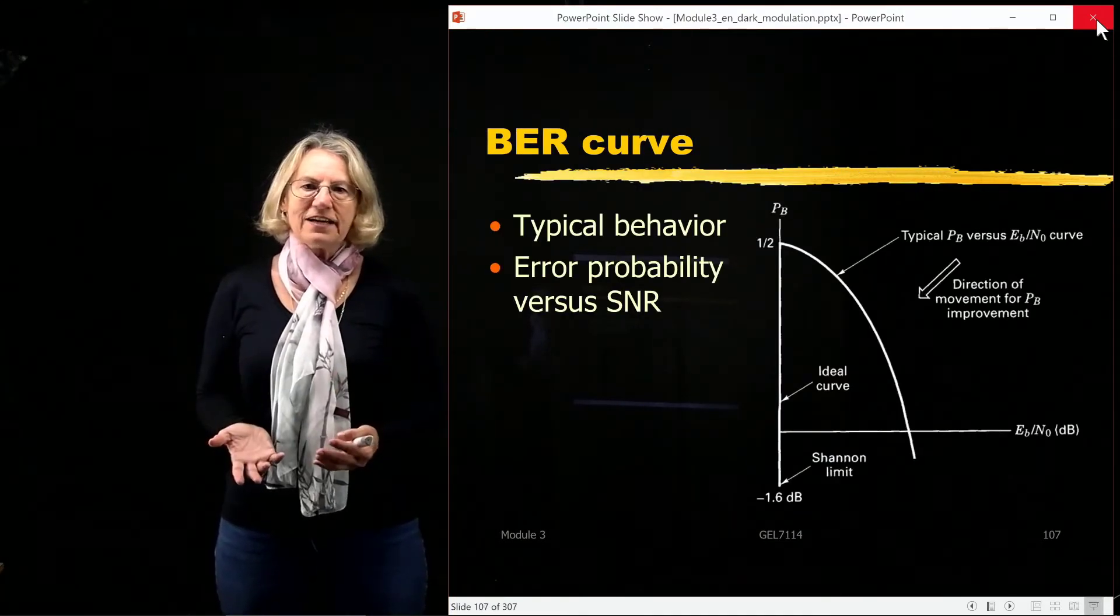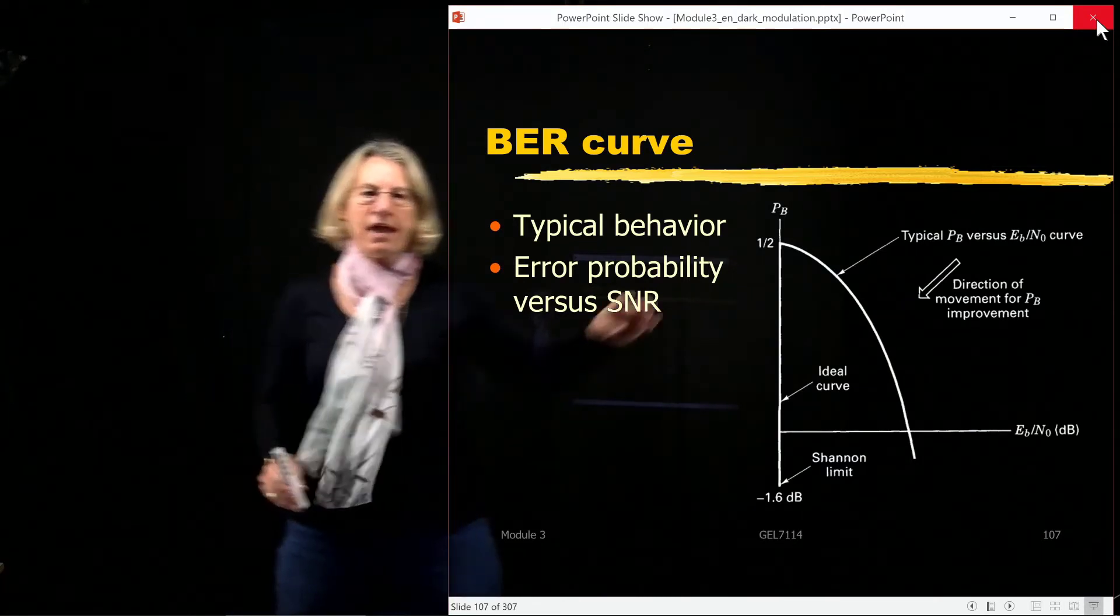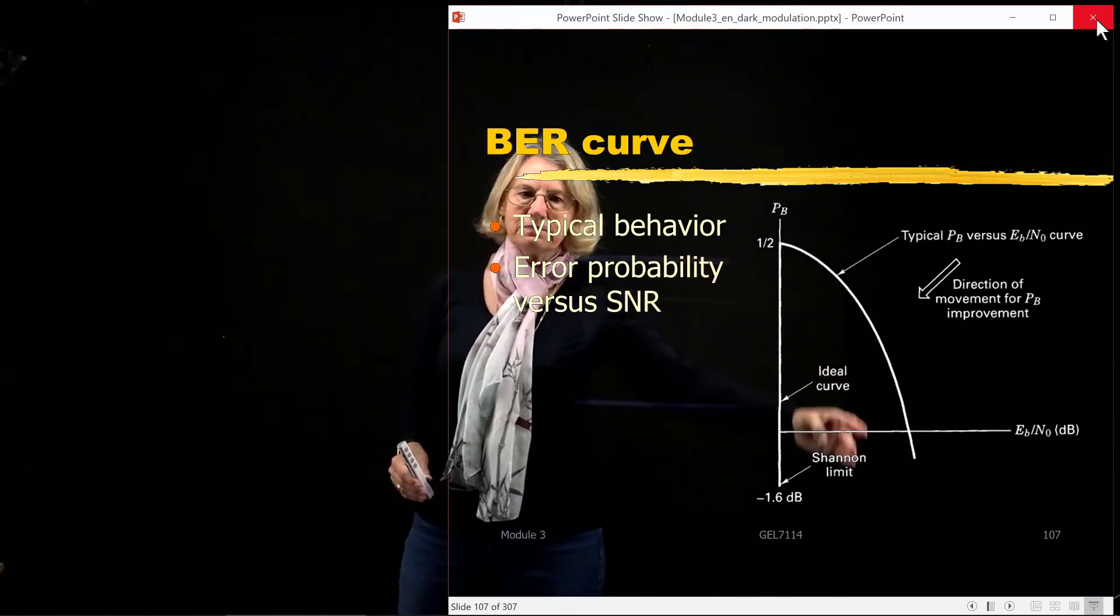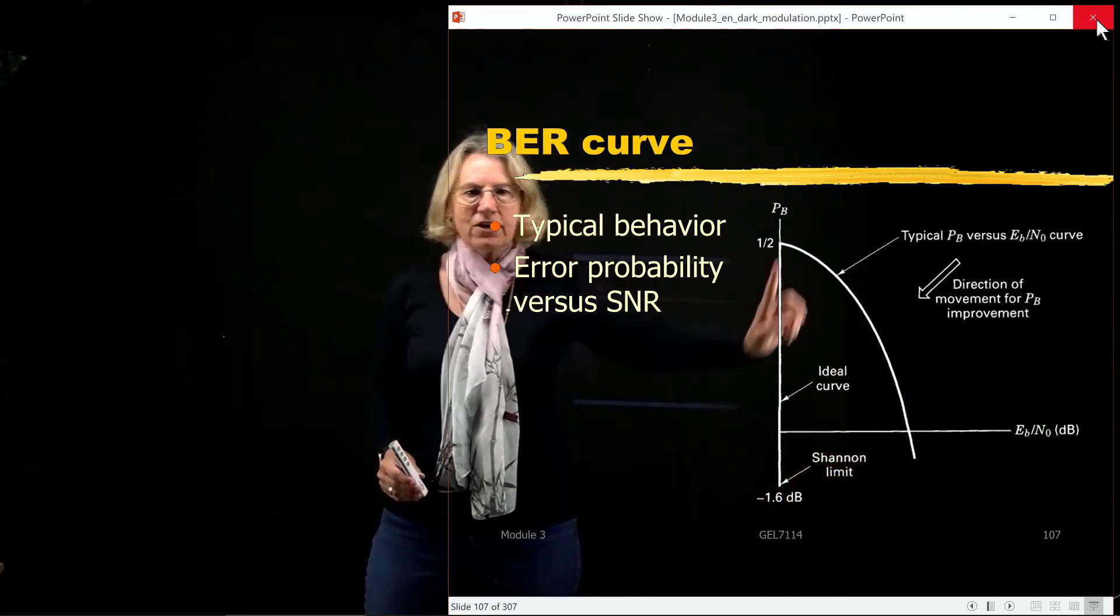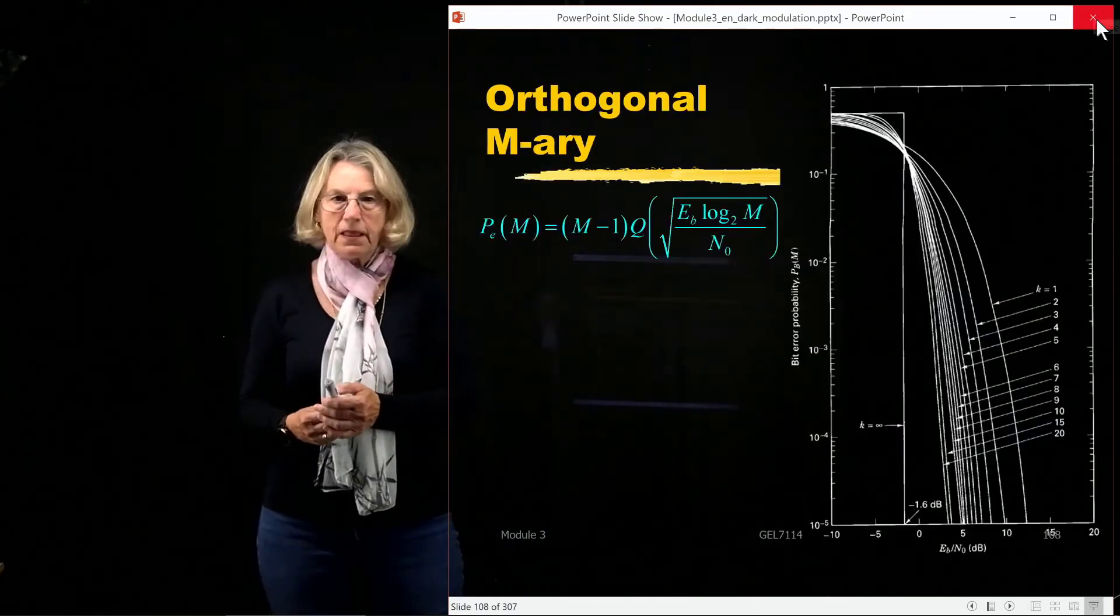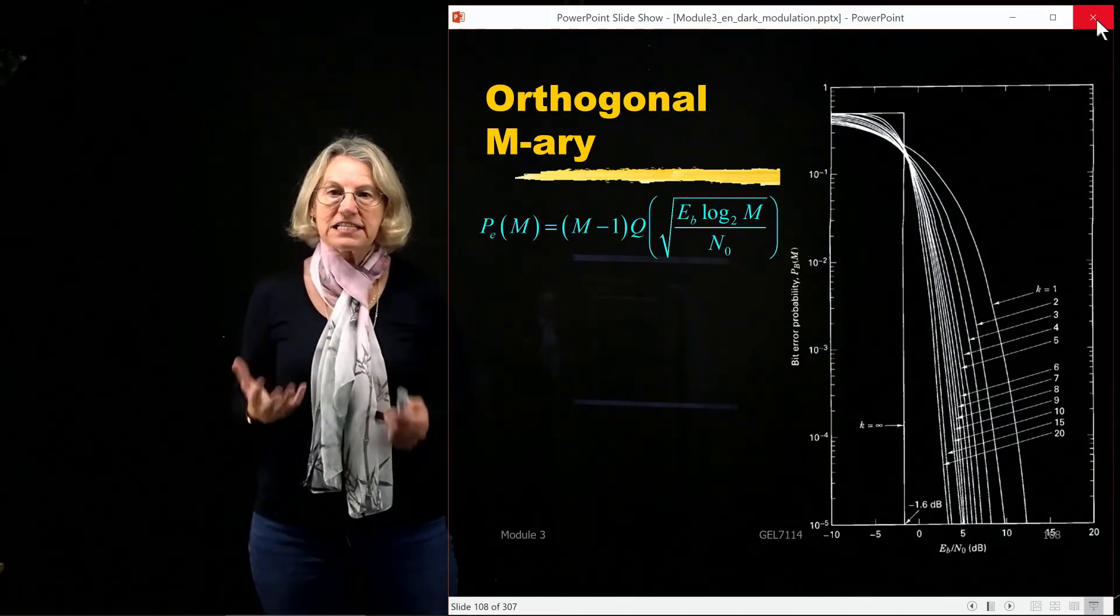Now, if we look at the BER curve, we know that the typical behavior is this waterfall curve. So we're plotting Eb over N0, and here a probability of error. And if we look at the FSK performance,